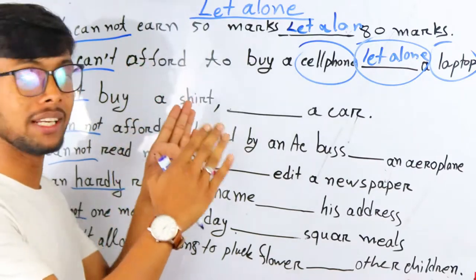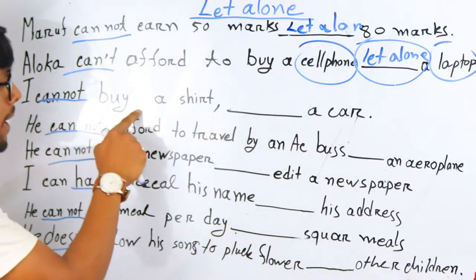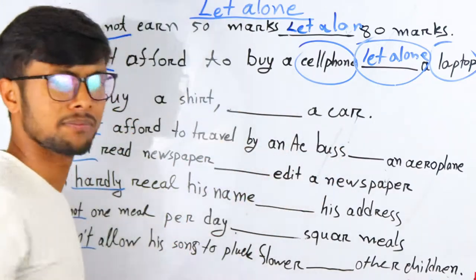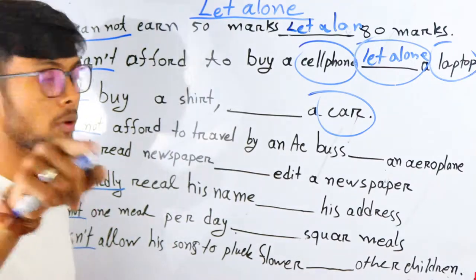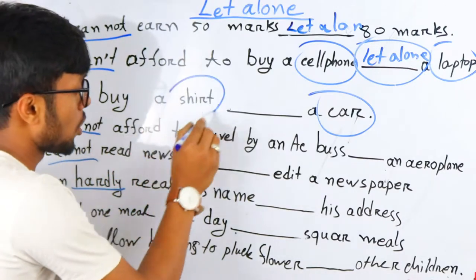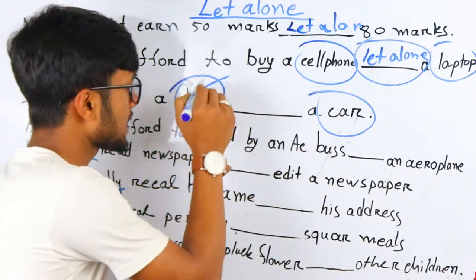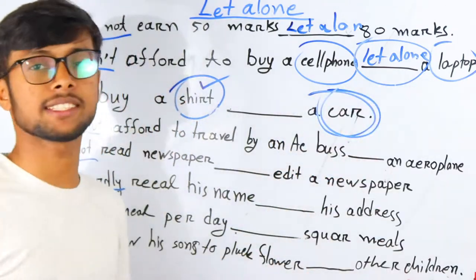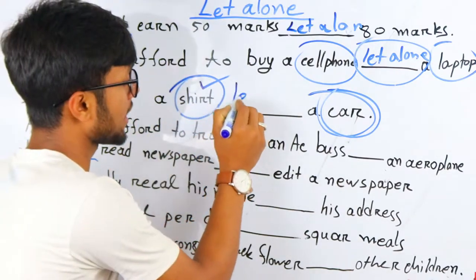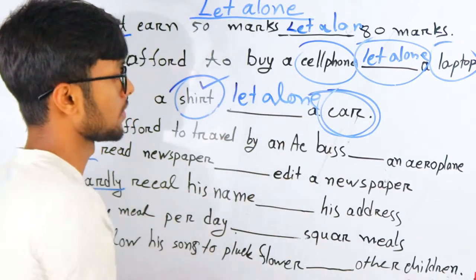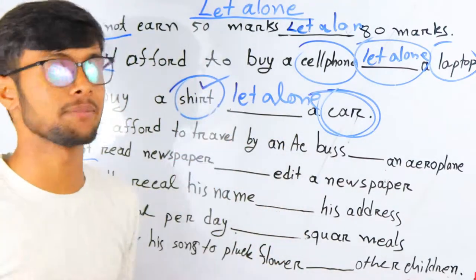Next example: 'I cannot buy a shirt, let alone a car.' Do you have any concept about the price of a car? If a person can't buy a shirt — knowing how inexpensive a shirt is compared to a car — it is impossible to think about buying a car. So at this moment we use 'let alone.'